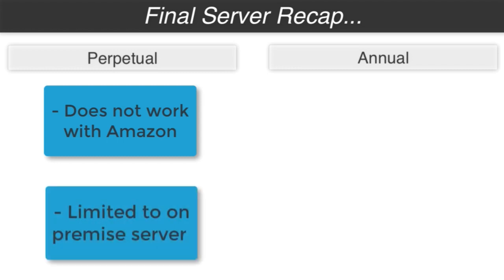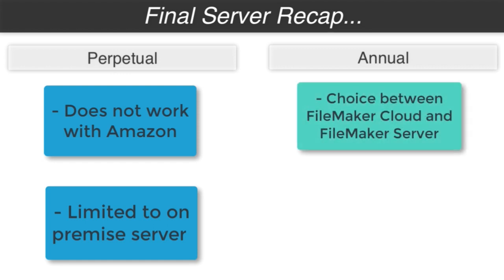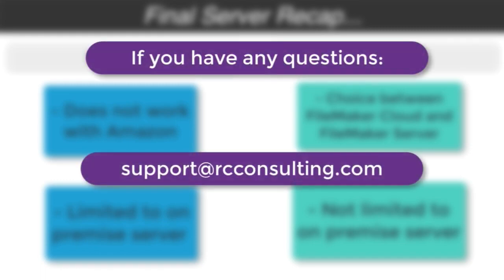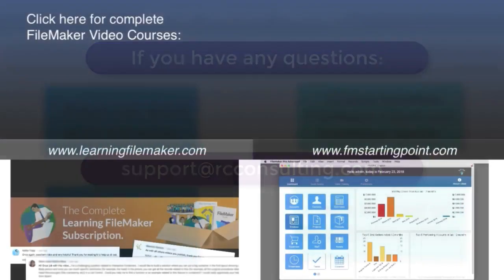If you go with annual licensing, you have complete flexibility — either a cloud server running in Amazon's data center, or FileMaker Server on-premise running on a Mac or Windows machine, typically in your office but potentially anywhere. FileMaker Cloud works on Amazon's hardware, which is only available on a subscription basis, so the perpetual model simply doesn't work with Amazon. That wraps up our licensing conversation. If you have any questions about licensing or how to choose what's right for your team, feel free to reach out at support@rcconsulting.com. Thank you.